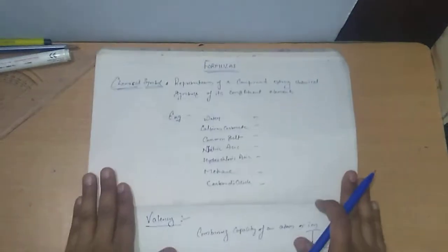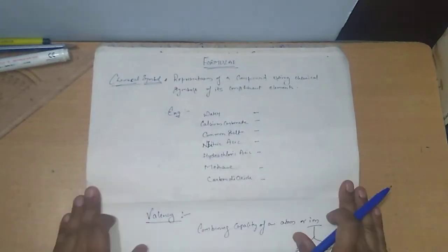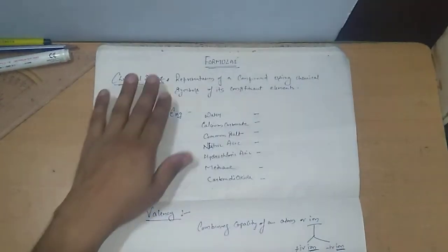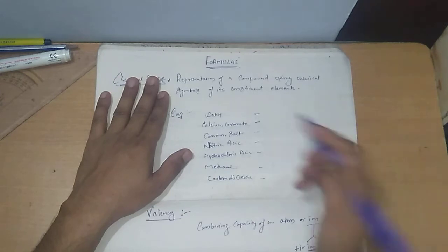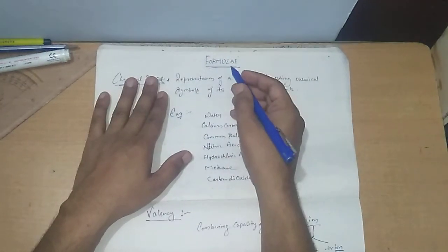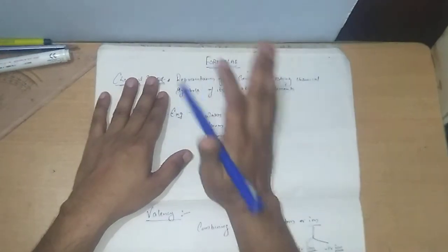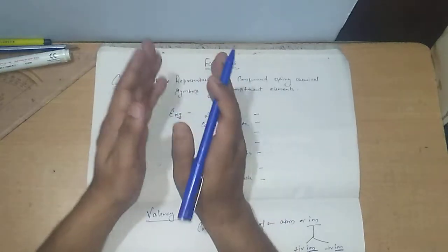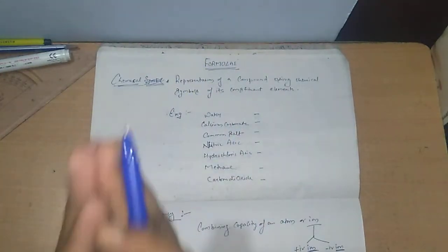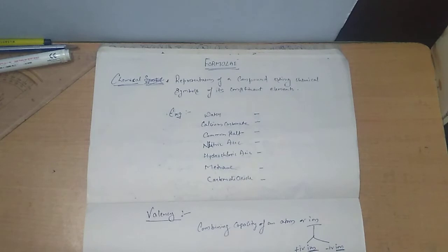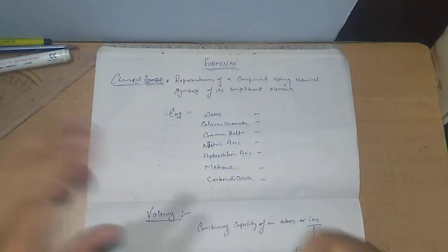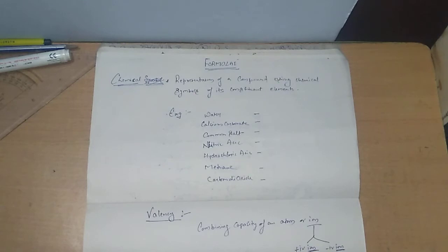Chemical formulas are a representation of compounds. We have discussed that symbols are used separately to represent elements — each element has a fixed symbol. I hope all of you have searched the periodic table on the internet and looked at it carefully.